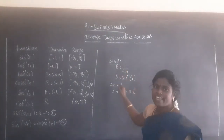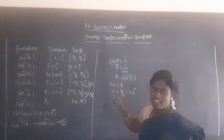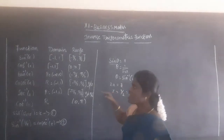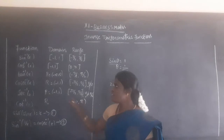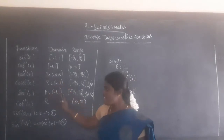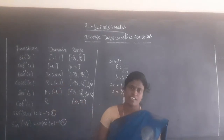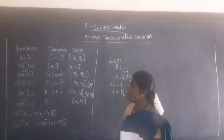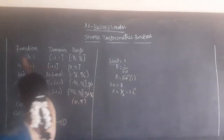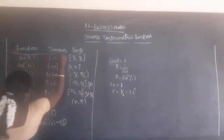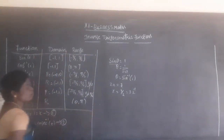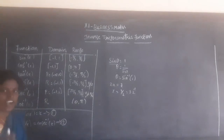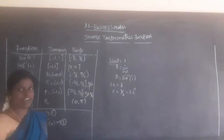Sin inverse is sin inverse, cos inverse is cos inverse, tan and tan inverse, cosecant inverse, secant inverse, cot inverse. Here is the table. As far as functions, domain and range — there are 6 trigonometric ratios and 6 inverse functions.